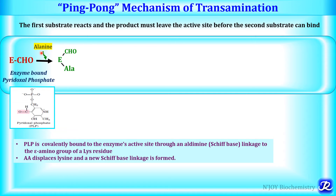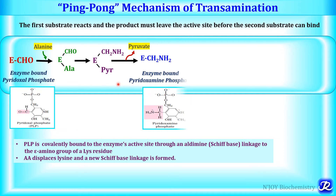When alanine — the substrate — comes and reacts at the active site of the enzyme, this amino acid alanine displaces lysine and a new Schiff-base linkage is formed. The amino group is then carried by pyridoxal phosphate to form pyridoxamine phosphate. As the amino group is removed from alanine, alanine is converted into the keto acid pyruvate. There is release of pyruvate, forming enzyme-bound pyridoxamine phosphate. So the amino group from alanine is carried by pyridoxal phosphate, converting it to pyridoxamine phosphate, while alanine is converted into pyruvate and released.